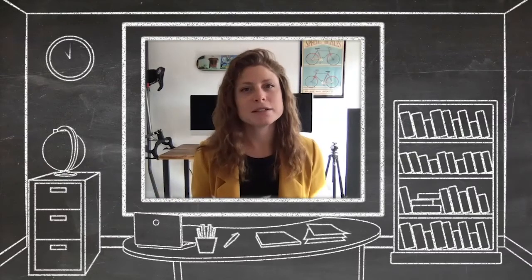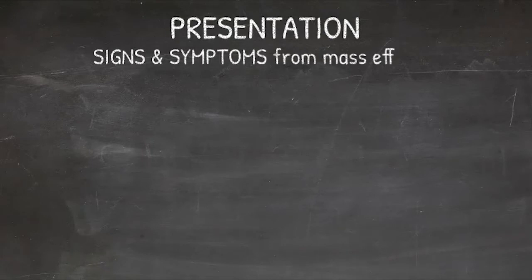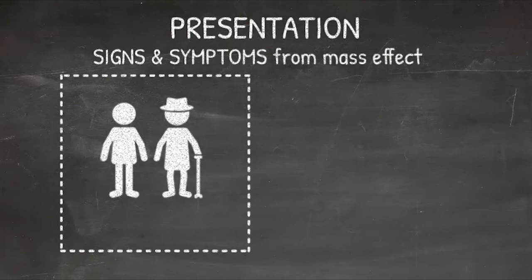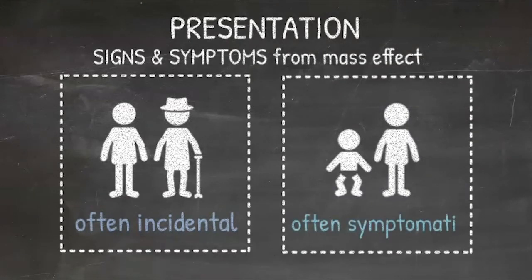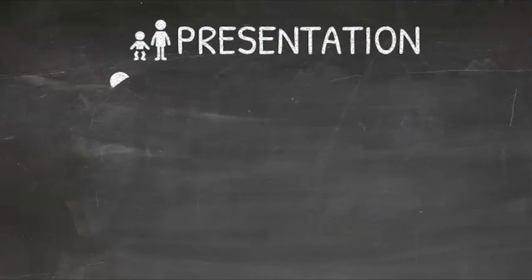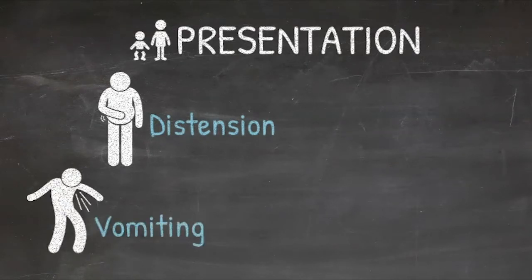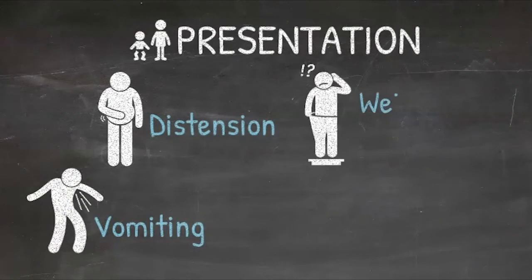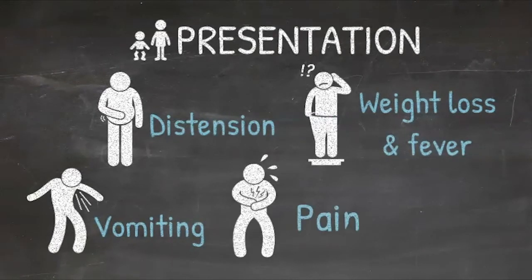How would a mesenteric or omental cyst typically present? The signs and symptoms that occur with mesenteric and omental cysts are often related to the mass effect of the cyst itself. While in adults they can often be asymptomatic or incidentally found, about 40 to 60% of children present with some symptoms. Those symptoms can include abdominal distension related to the mass itself or vomiting, a subacute history of weight loss or fever, or some sort of acute abdominal pain.